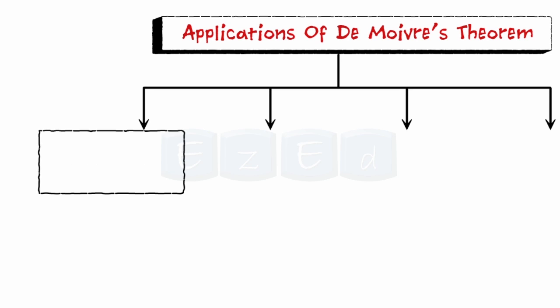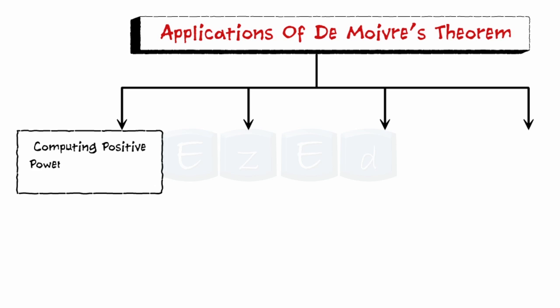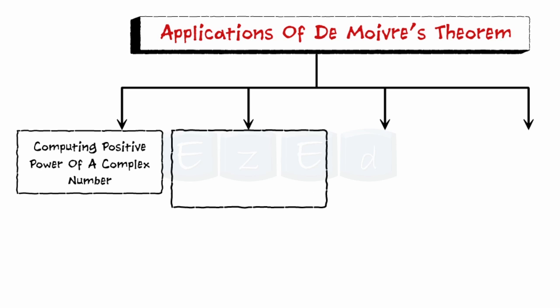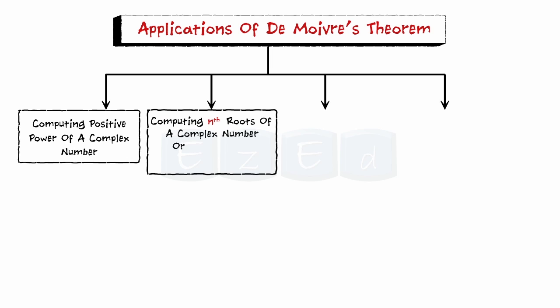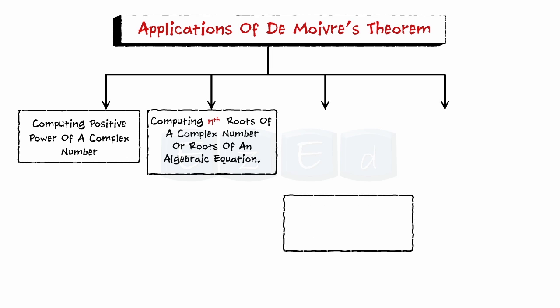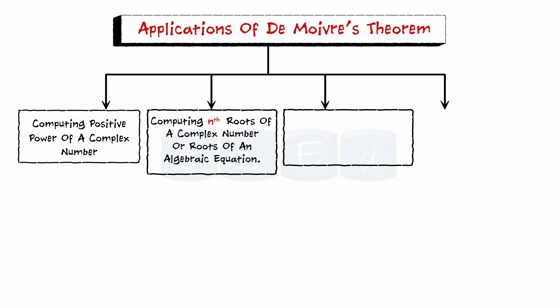This theorem has a lot of applications. First, it is useful in computing positive powers of a complex number. Next, it helps in computing nth roots of a complex number, or rather finding roots of an algebraic equation. Further, this formula also connects complex numbers and trigonometry — it helps in expansion of sine n theta and cosine n theta in powers of sine theta and cosine theta.